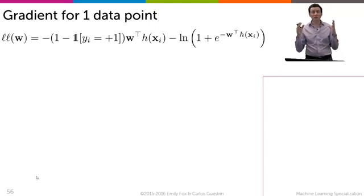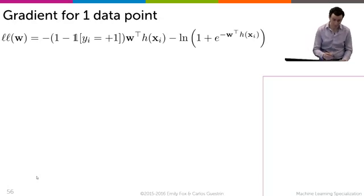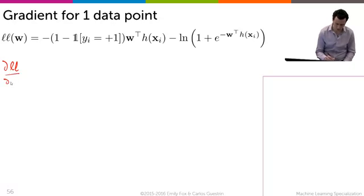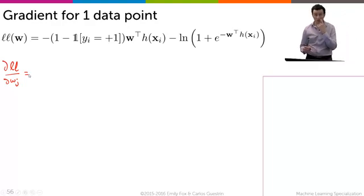Very good. We took the log likelihood function for a single data point and showed that it can be written in this particular form. And now we're going to take the derivative of that with respect to the parameter w_j, and that's the last thing that we'll do here. So what's the partial derivative of the log likelihood function with respect to a parameter w_j?